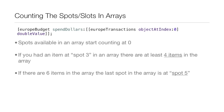Arrays start counting at zero, so if you have an item at spot three in an array, there are at least four items in the array: zero, one, two, and three. If there are six items in the array, the last spot is at index five. This is something you need to remember when working with arrays because it can easily cause you to get the wrong object and really cause problems in your code.